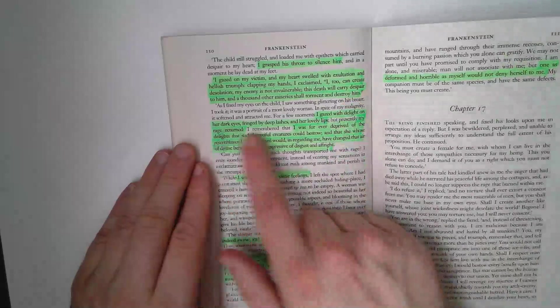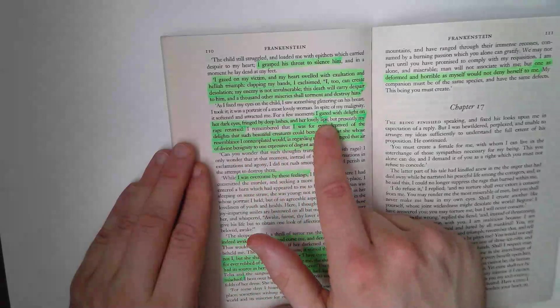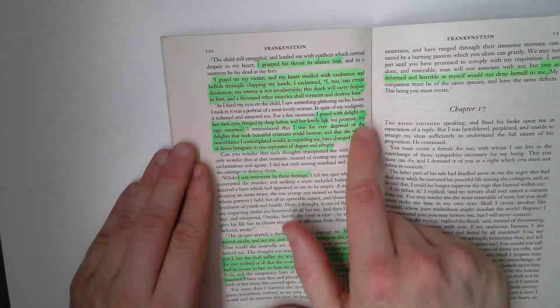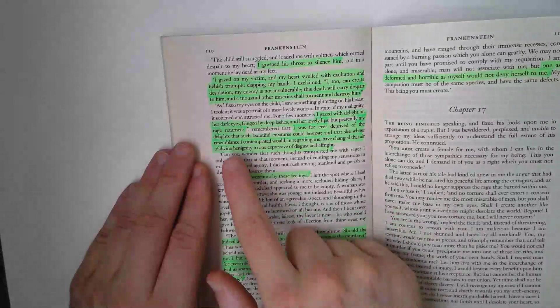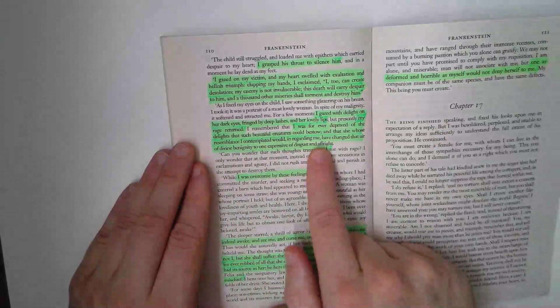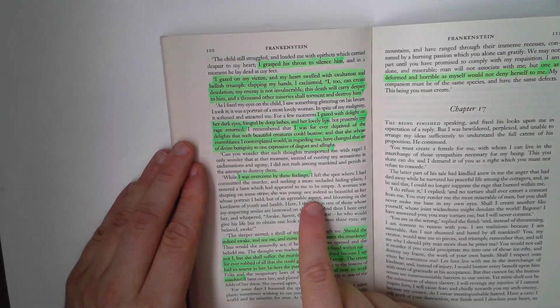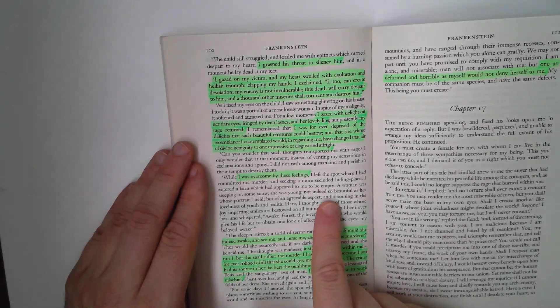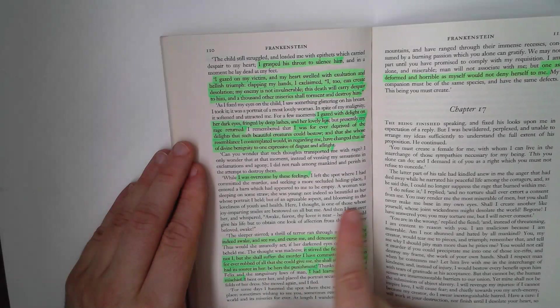Of course, he sees Victor's mother in the locket. I gazed with delight on her dark eyes, fringed by deep lashes and lovely lips. But my rage returned, because of course he could never have something like this. And even if he could, they would look at him in disgust and affright. And he was overcome by this feeling of rage, because of course he has no aspect of an agreeable aspect, blooming in the loveliness of youth and health, and then frames her.